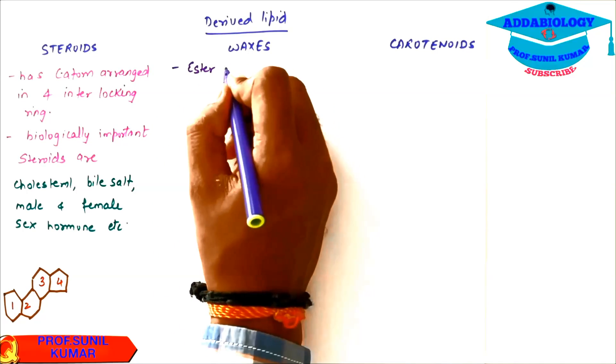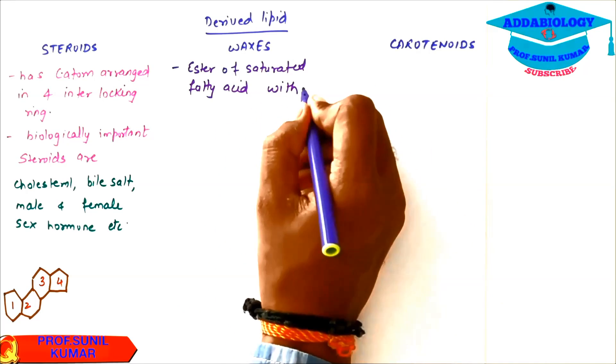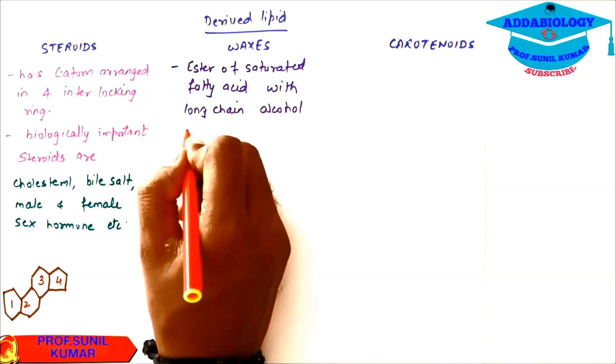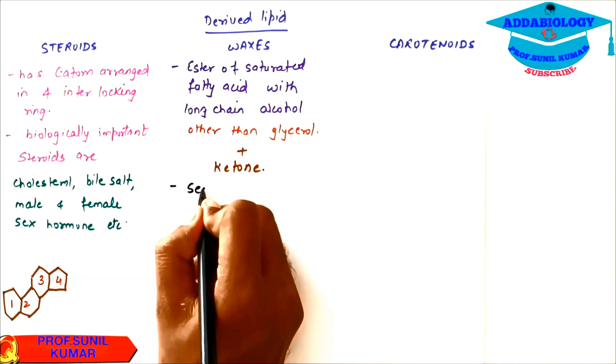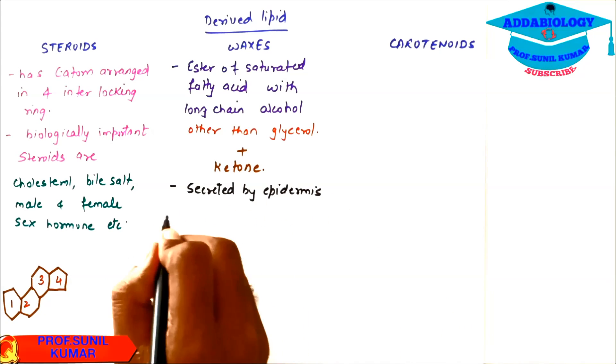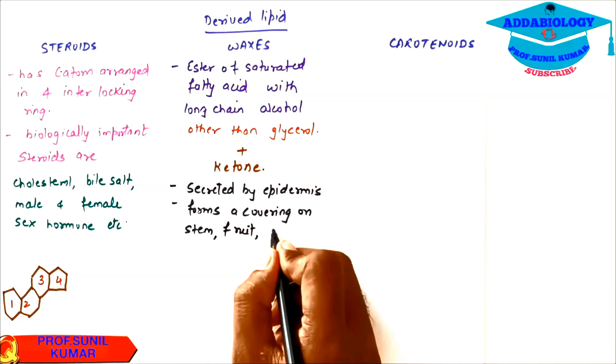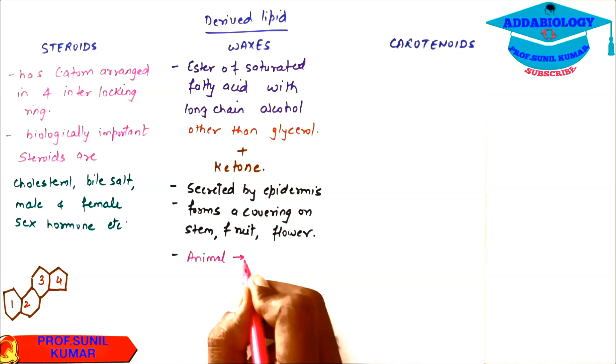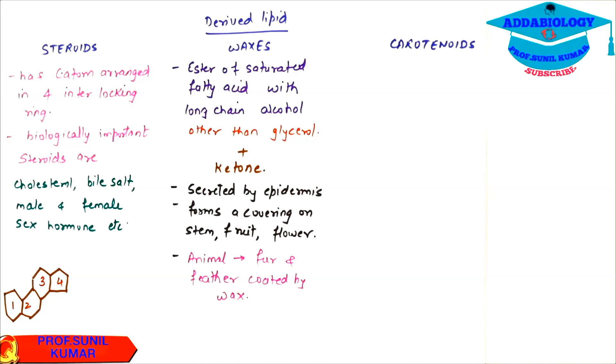When I talk about derived lipids, they are esters of saturated fatty acid plus alcohol, but here the long chain alcohol is not glycerol—any alcohol other than glycerol plus ketone. Waxes are secreted by epidermis of leaves. It forms a covering on the stem, fruits, flowers. Therefore we see that water droplet in the form of a pearl moving on the leaf due to wax coating on leaf. Animals have it on the fur and feather, all coated by wax.